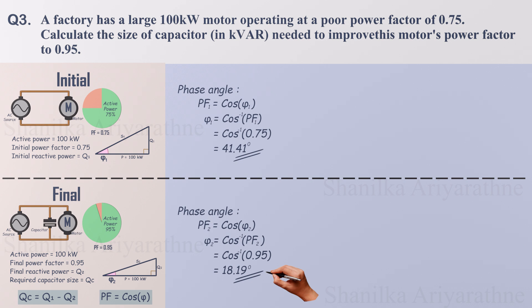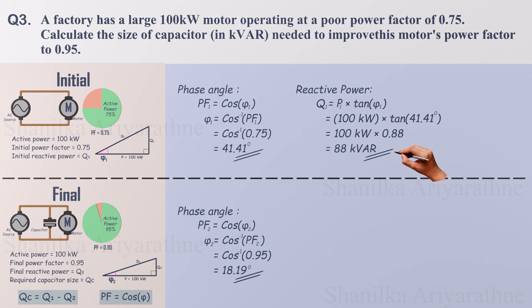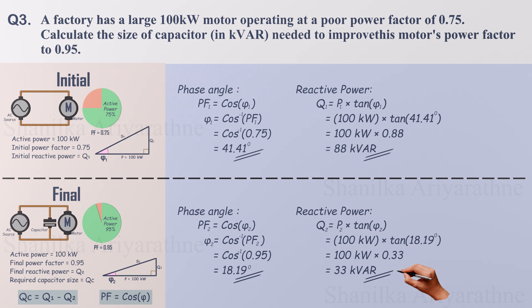Since we have two parameters of the power triangle, now we can calculate every other parameter. Let's calculate the initial reactive powers for both cases. Q1 is 88.2 kVAR — this represents the reactive power currently consumed by the motor. Q2 is 32.9 kVAR — this is the reactive power that should remain after correction.